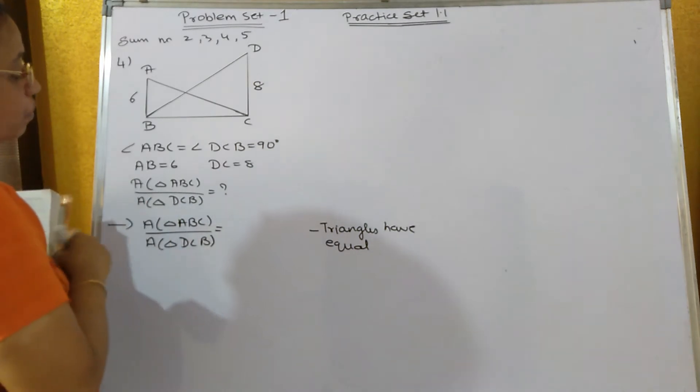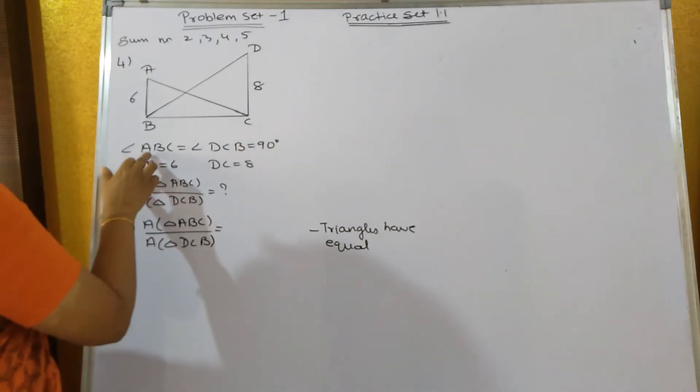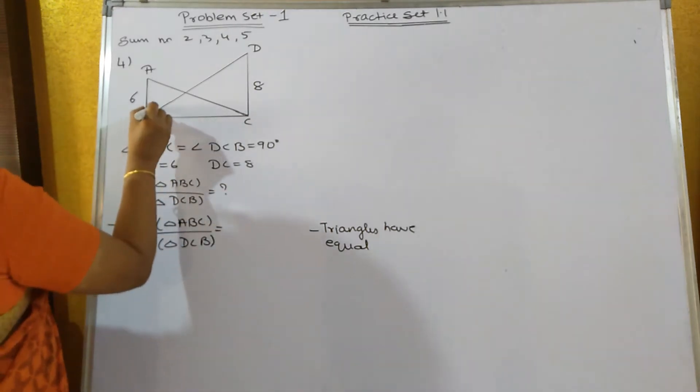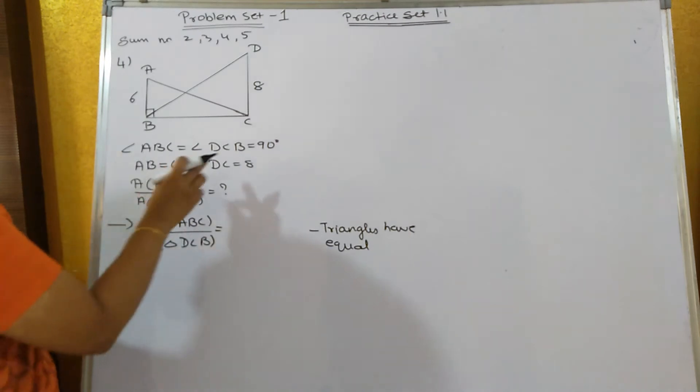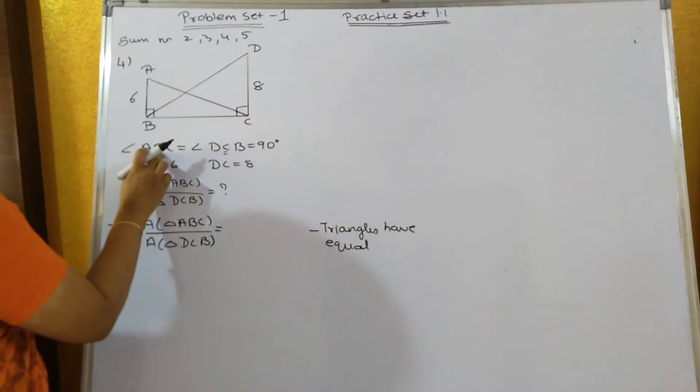And the ratio of the area of triangle ABC to triangle DCB. They have already given angle ABC—that is, angle B is 90 degrees—and angle C is also 90 degrees. The middle letter indicates which angle is 90 degrees.